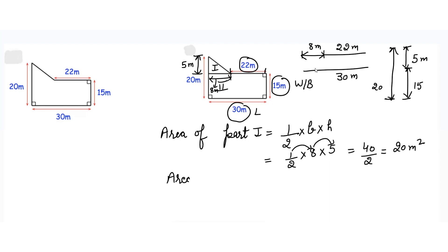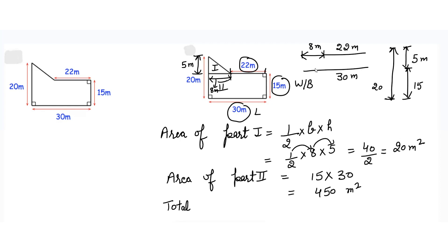Then area of part 2, which is a rectangle, will be equals to 15 into 30. When you multiply you will get 450 meter square. Now if I have to find out the total area, it will be equals to 450 plus 20 which is equals to 470 meter square.